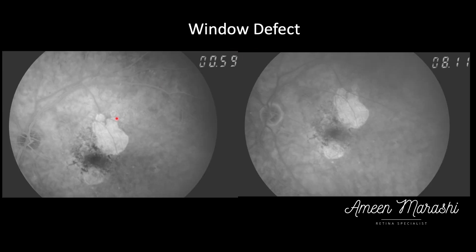How do we differentiate window defect from leak on fundus fluorescein angiography? A window transmission defect will show hyperfluorescence in the early phases following the choroidal circulation with distinct borders, but in late phases it might fade away as the fluorescein dye washes out. It will never increase in size and will remain with those distinct borders.